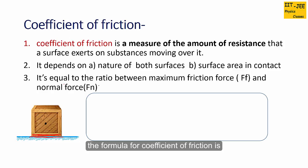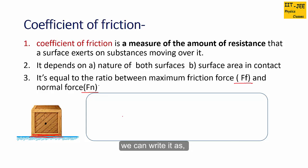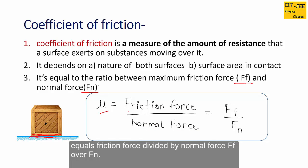The formula for coefficient of friction is the ratio between maximum friction force and the normal force. We write it as: mu (the symbol for coefficient of friction) equals friction force divided by normal force, FF over FN.